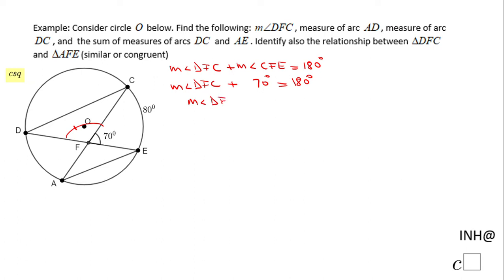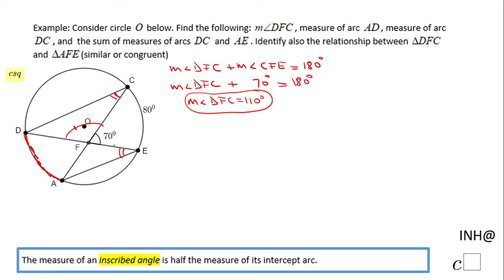Then we have to find the measure of arc AD, which is this arc right here. For that we need to find either angle C or angle E. These two angles are congruent, they have the same inscribed arc, so they are congruent.